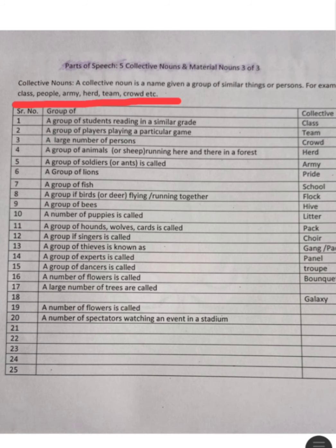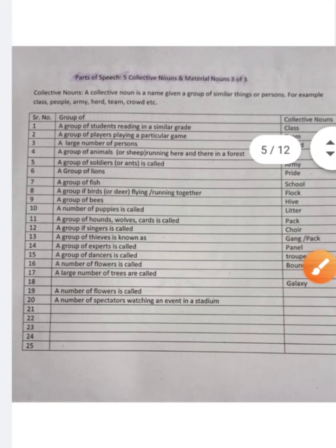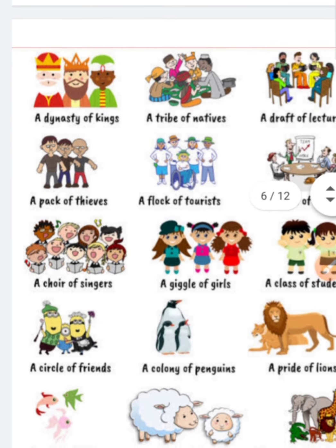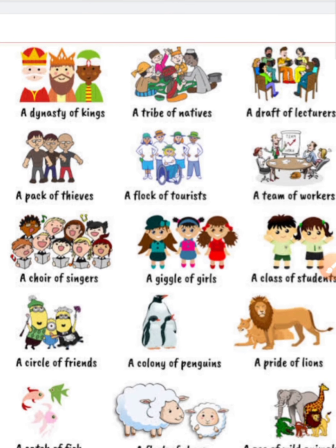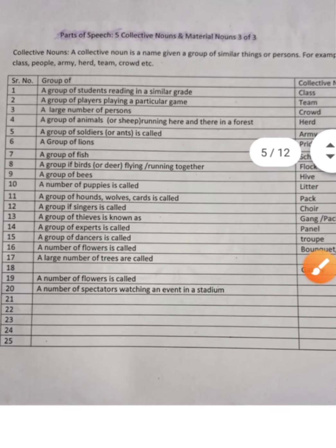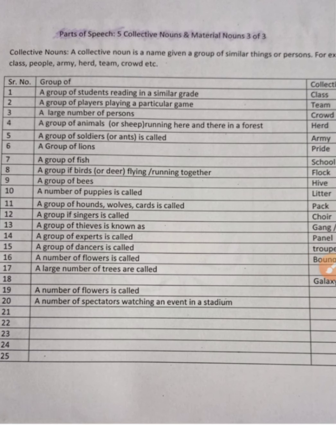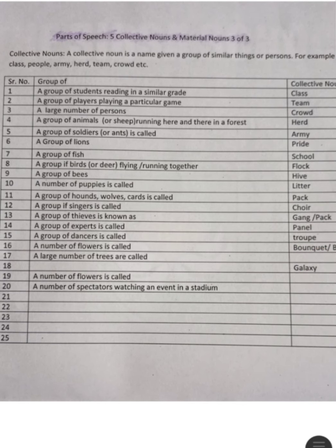Army refers to a group of soldiers. A group of animals is called a herd. People gathered together form a crowd. A group of students reading in a similar grade is called a class. A group of players in a particular game is called a team.